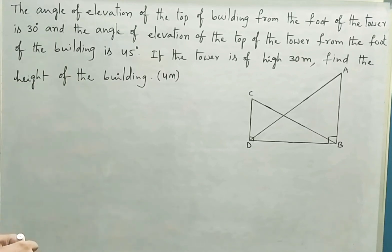The question is: the angle of elevation of the top of the building from the foot of the tower is 30 degrees, and the angle of elevation of the top of the tower from the foot of the building is 45 degrees.